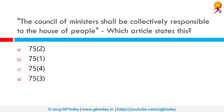The Council of Ministers shall be collectively responsible to the house of the people — which article states this? Correct answer is Article 75(3). It says the Council of Ministers shall be collectively responsible to the house of the people, i.e., to the Lok Sabha.